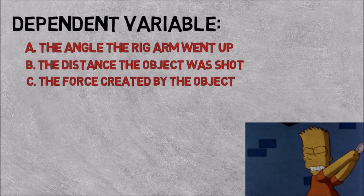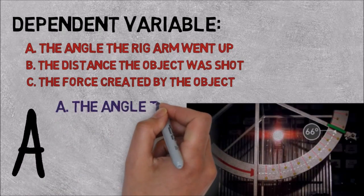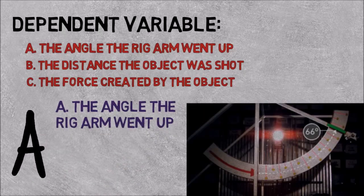The correct answer is A, the angle the rig arm went up, because it depended on whether a rock or a bullet was hitting it.